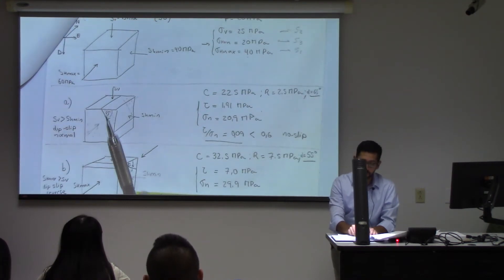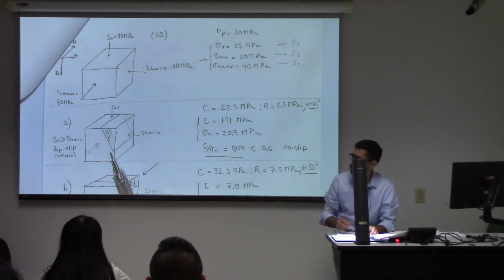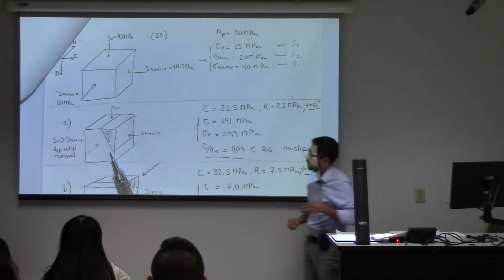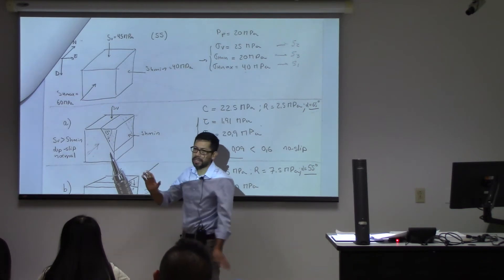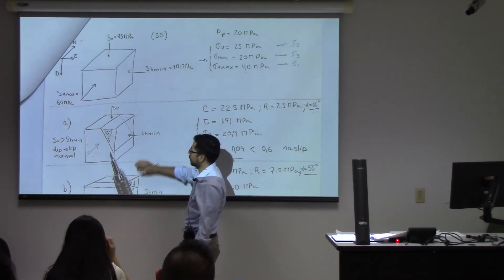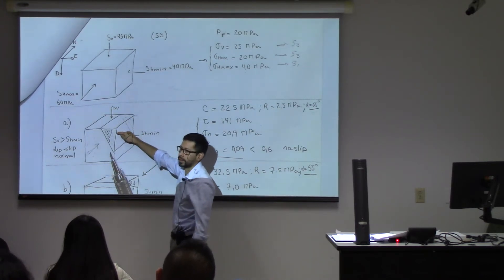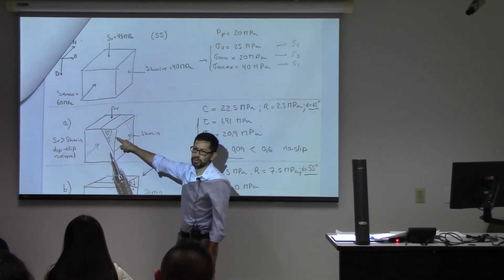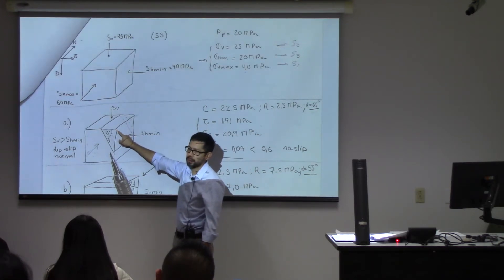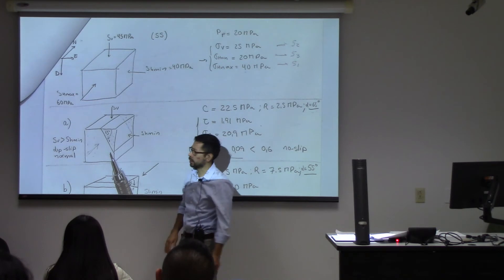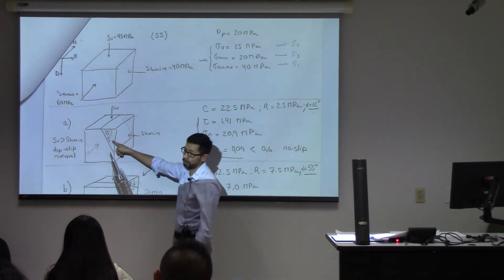First thing I would do is draw that fault, and I would try to recognize which stresses are making that fault move. Imagine for a minute that you don't have this stress, you don't have that stress — you just have the vertical stress. Would that block move if you just had vertical stress? I apply stress on this one and there is nothing on that side — would it move?